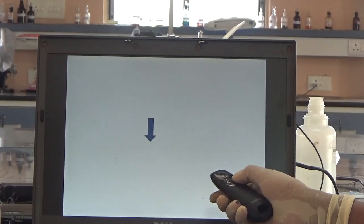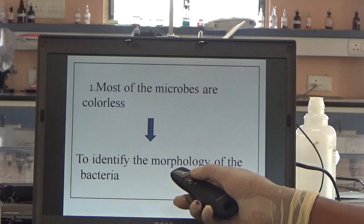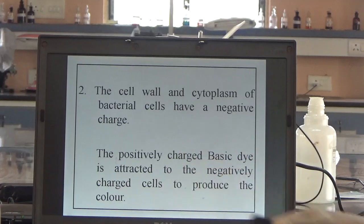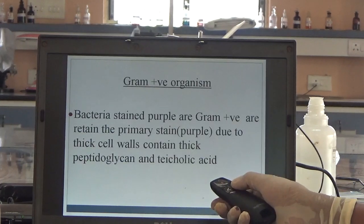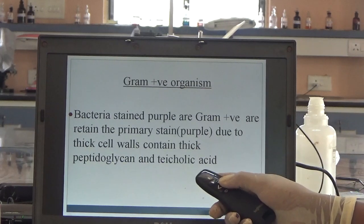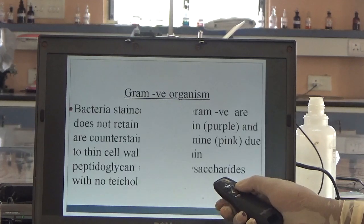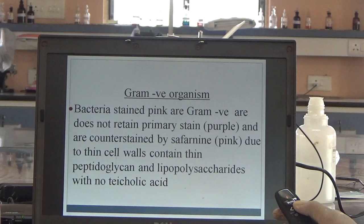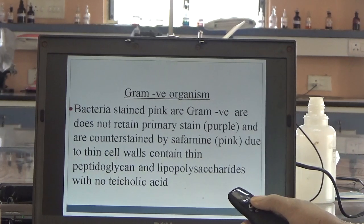What is the need for staining microbes? Most microbes are colorless, so to identify the morphology of bacteria we use staining. The cell wall and cytoplasm of bacterial cells have a negative charge; the positively charged basic dye is attracted to the negatively charged cells to produce color. Gram positive bacteria stain purple because they retain the primary stain due to thick cell walls containing thick peptidoglycan and teichoic acid. Gram negative bacteria stain pink because they do not retain the primary violet stain and are counterstained by safranin due to thin cell walls containing thin peptidoglycan and lipopolysaccharides with no teichoic acid.